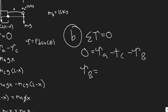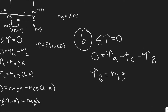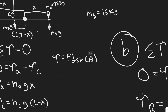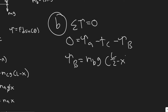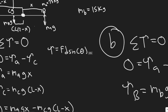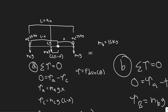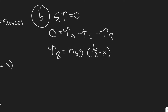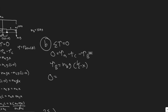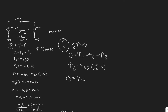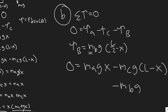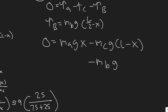The torque due to the board is M_B times G times (L over 2 minus X) times sine of theta. Theta is 90 degrees since the force is perpendicular to the lever arm, so sine of 90 equals 1 and we can ignore it. The torque due to the board is therefore M_B times G times (L over 2 minus X).